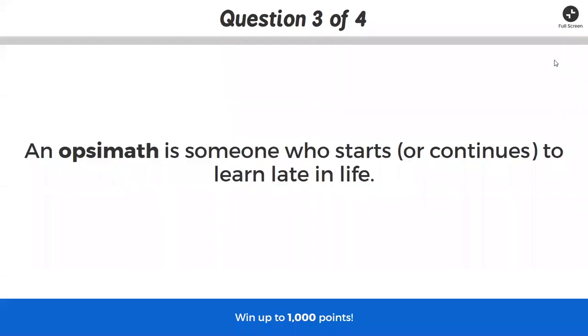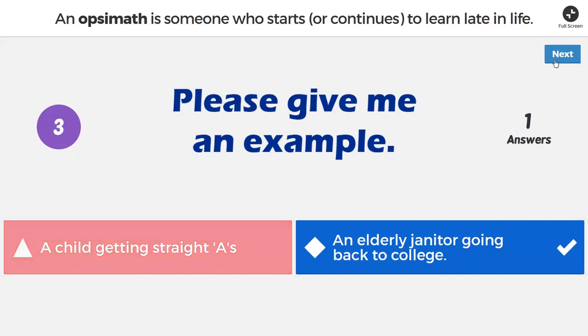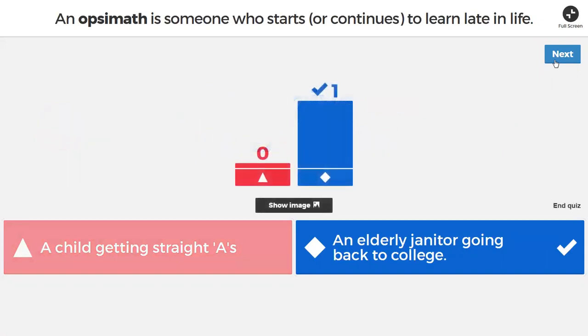And in question three, we go ahead and just define it. An opsimath is someone who starts or continues to learn late in life. And the image just says, give me an example. So it's not a picture of something, but an extension of the question. Give me an example.